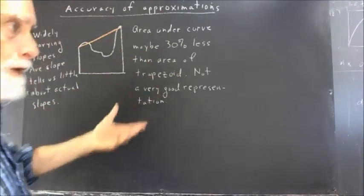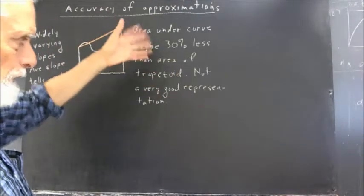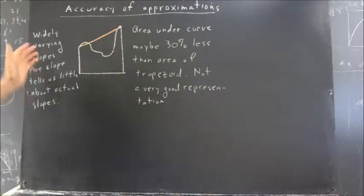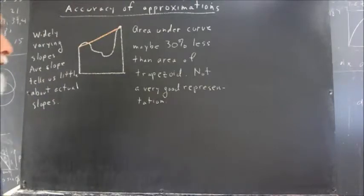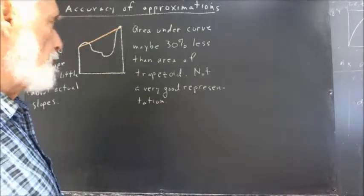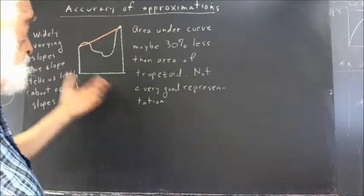That's maybe not totally useless. 30% less is not a huge difference. It's not as drastic as a difference in these widely varying slopes, but it's also not a very good representation, and whether it's useful or not depends on the situation.